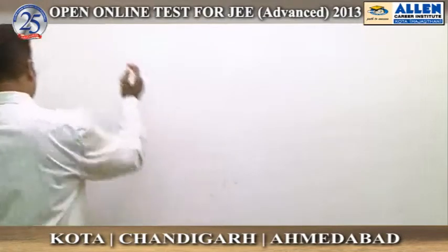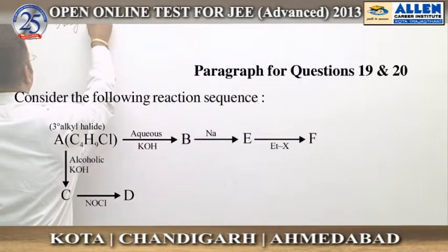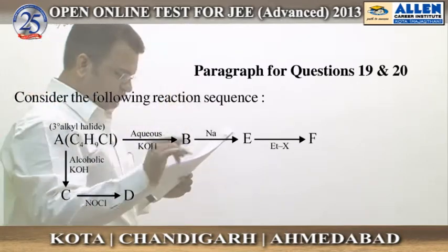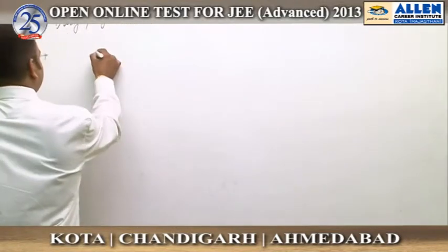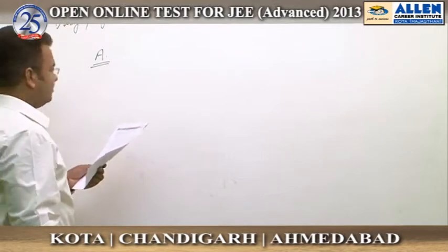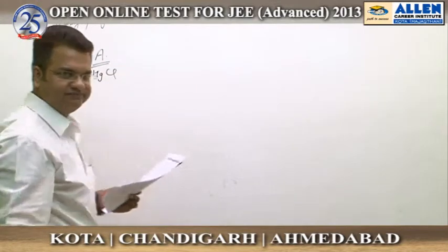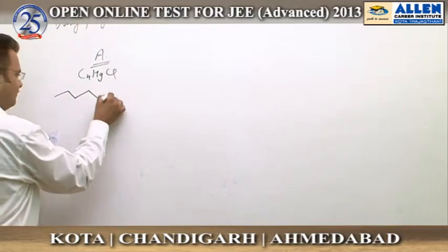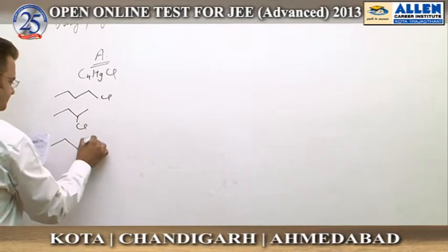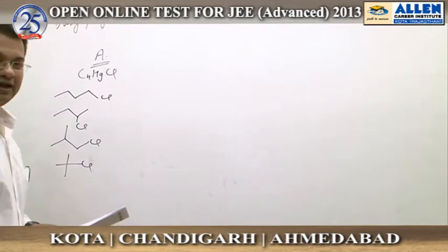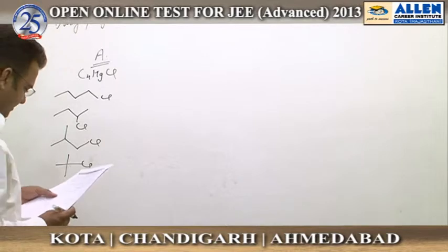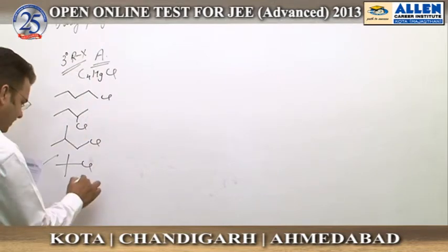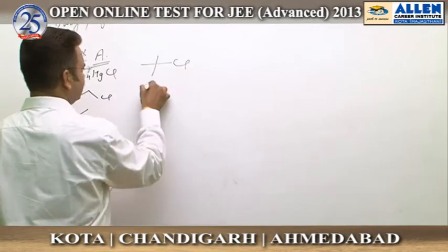Next is a paragraph for questions number 19 and 20. Let us discuss the paragraph in detail first. If you are considering the reaction sequence, A is given as a 3° alkyl halide. We will analyze for C₄H₉Cl — it has possibilities of 4 structures. It is easy to identify reactant A because it is given as 3°, and the tertiary structure is the only one. So we claim this is A, and if you identify A, the reaction becomes very easy.